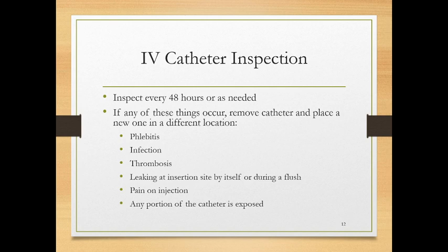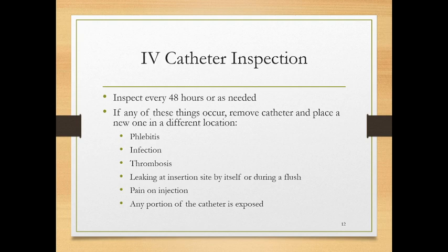Inspect the catheter every 48 hours or as needed, though more frequent inspection is recommended. Change the catheter and move to a different location if you see phlebitis — inflammation of the vessel — infection, thrombosis or clotting at the site, leaking at the insertion site, or pain on medication injection. Check it every time you flush it, about every couple of hours if it's not in active use. Flush with saline to keep it patent.